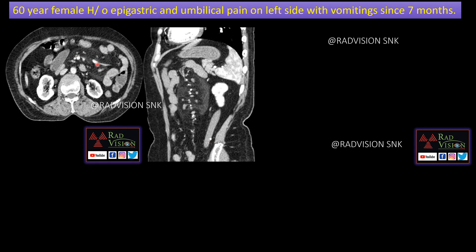Next case: a 60-year-old female with epigastric and umbilical pain on the left side and vomiting since 7 months. You can see there is an increased area of fat attenuation noted around the mesenteric vessels, and this increased fat attenuation displaces the bowel loops. The mesenteric vessels are seen at the center of the lesion, and there is a capsule-like structure separating the fat density from the bowel loops. This is a classical case of mesenteric panniculitis.